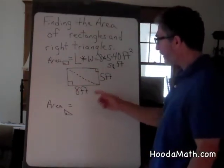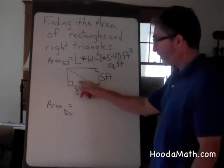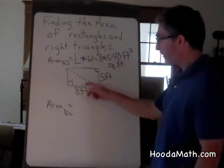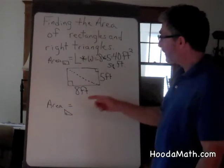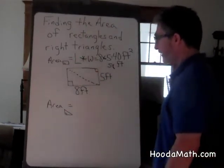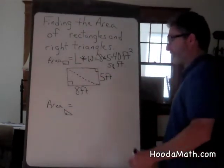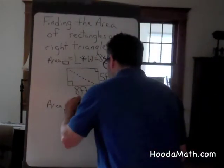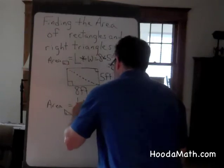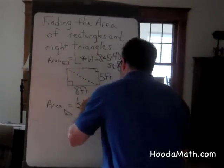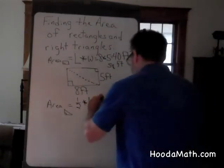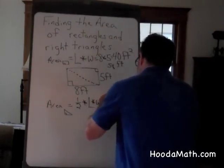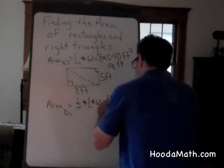So the area of this right triangle is half of the area of the rectangle. So the formula for a right triangle is 1 half times the length times the width, or the length times the width divided by 2.